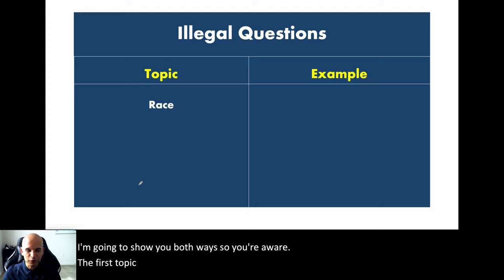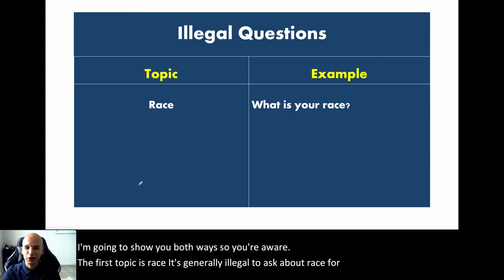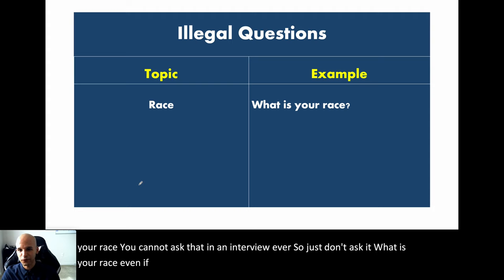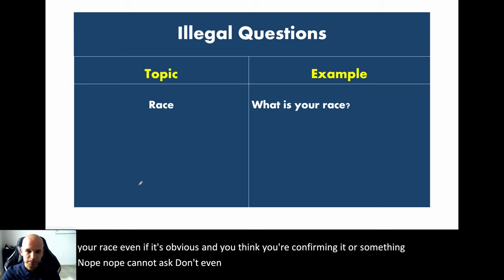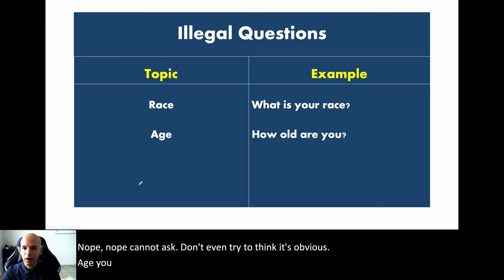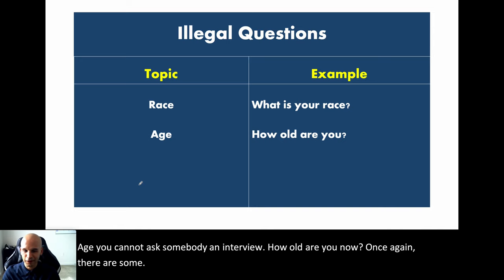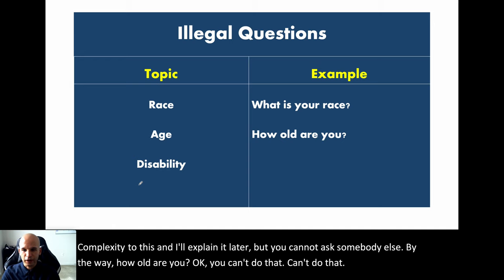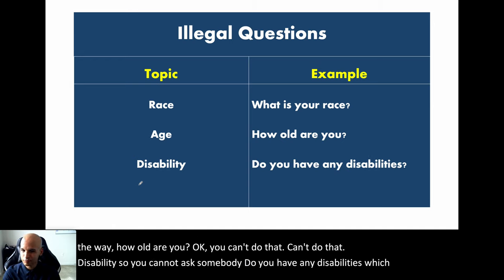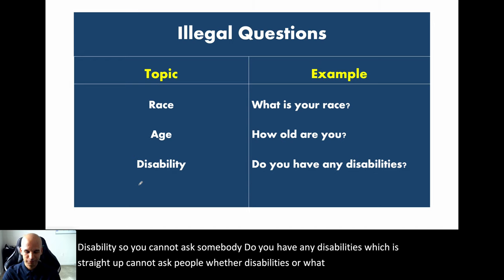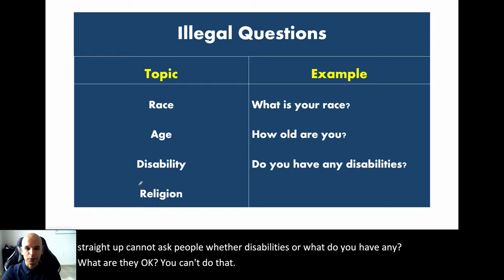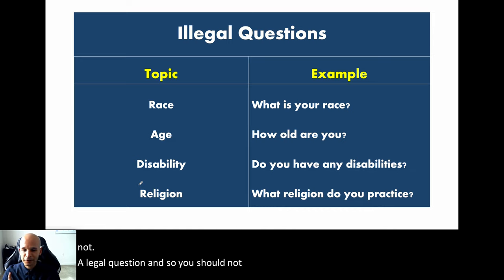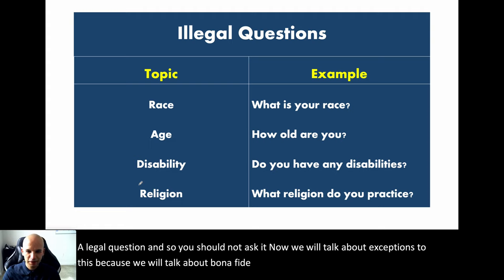The first topic is race — it's generally illegal to ask 'What is your race?' in an interview. Age: you cannot ask someone 'How old are you?' Disability: you cannot ask 'Do you have any disabilities?' Religion: you cannot ask 'What religion do you practice?' — that is not a legal question. There are exceptions involving bona fide qualifications, which we'll discuss shortly.